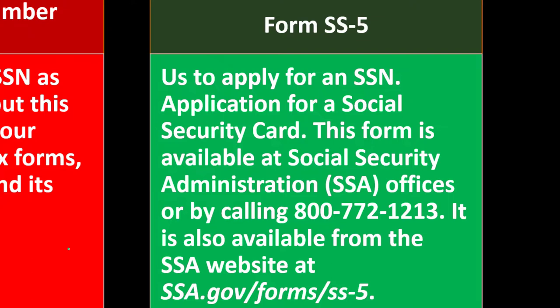If you need to apply for a Social Security Number, you use Form SS-5 to start the process — Application for a Social Security Card. This form is available at Social Security Administration offices or by calling the SSA. It is also available from the SSA website at ssa.gov.